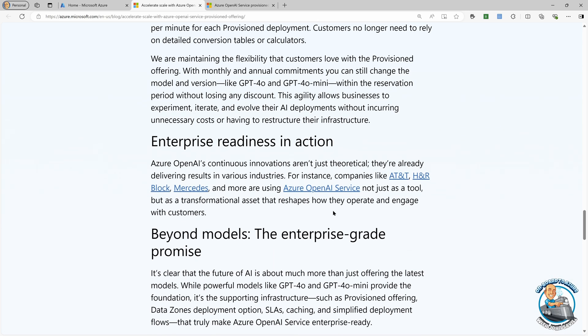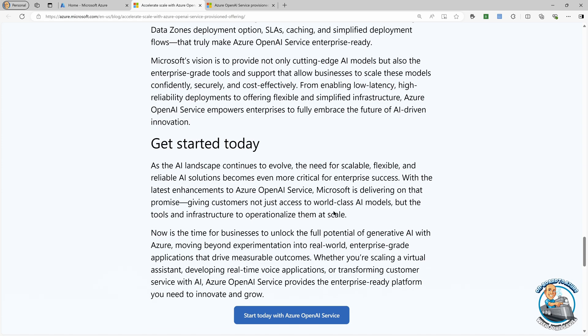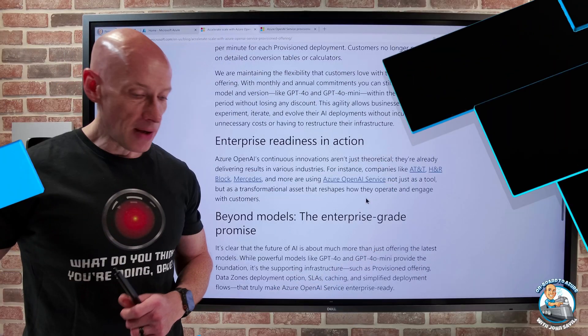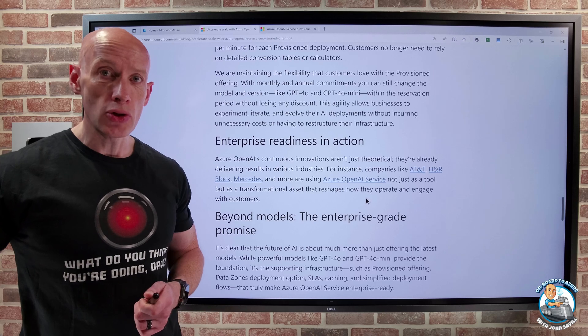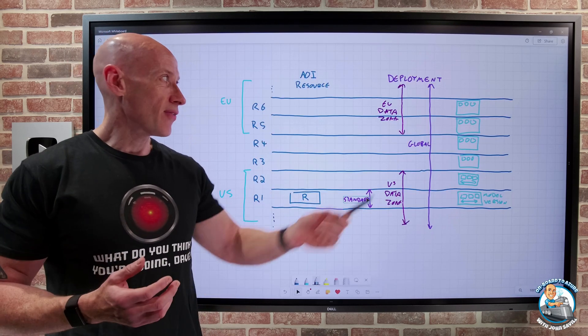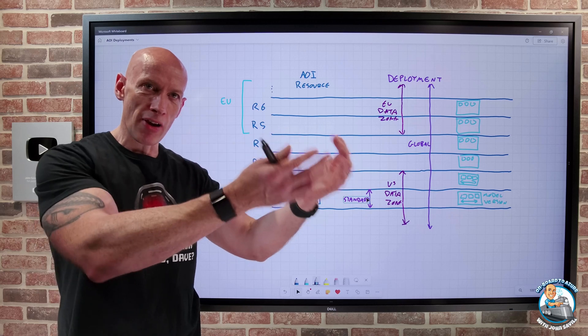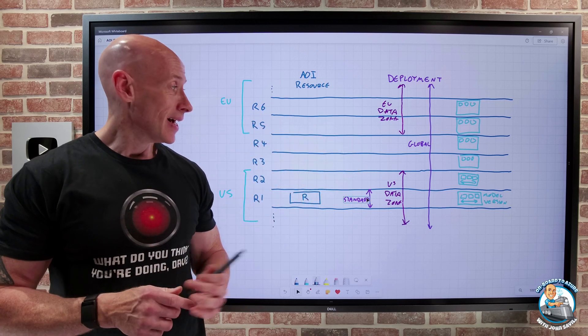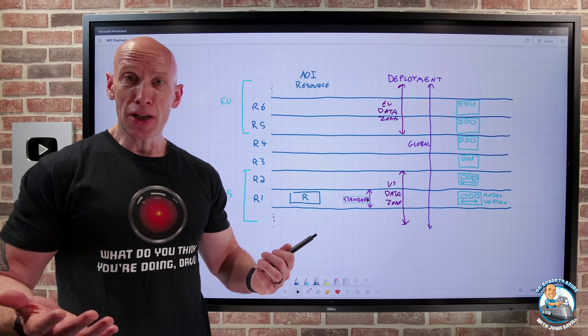And then it just gives some examples of all the work that is being done. So a really great article. I've linked it in the description below. You can go and check that out. But really great new capabilities. I think this data zone is huge. I think the lowering of the barrier of entry for the PTUs, the new Latency SLA, really cool stuff. Till next video, take care.